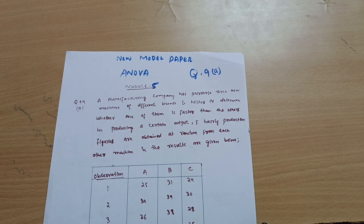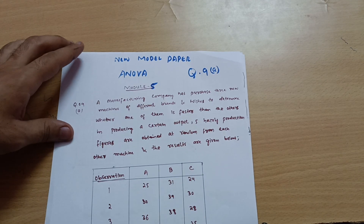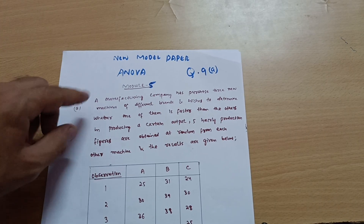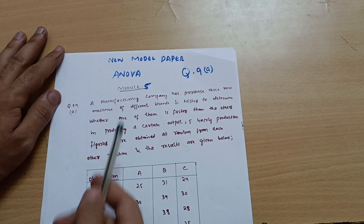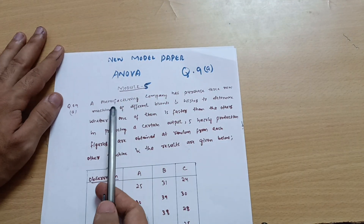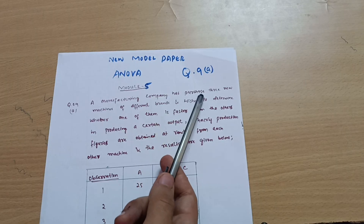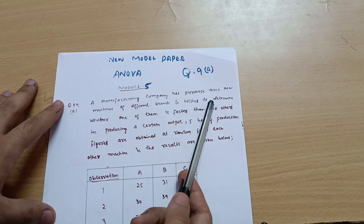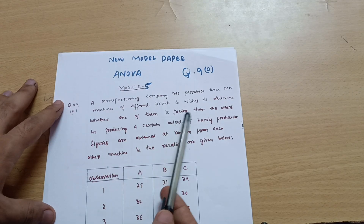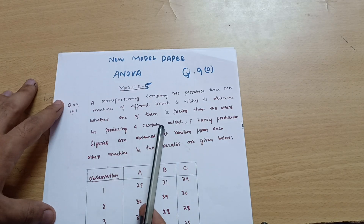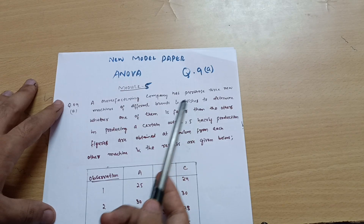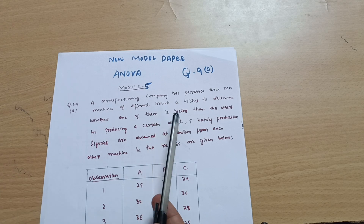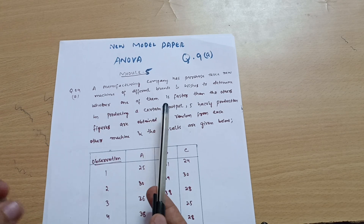Hello everyone and welcome back. We are discussing the model question paper. In this video I will explain question number nine, which is based on ANOVA. A manufacturing company has purchased three new machines of different brands and wishes to determine whether one of them is faster than the others in producing a certain output.